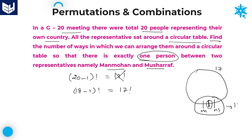Within the single entity, the middle position is always fixed because the condition is exactly one person sits between Manmohan and Musharaf. You can interchange Musharaf and Manmohan, but you cannot interchange the middle person. These two members — Manmohan and Musharaf — can be arranged in 2 factorial ways. Therefore the required answer for this question is 17 factorial into 2 factorial.